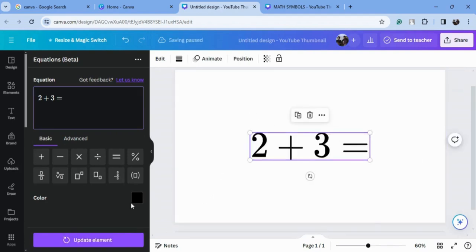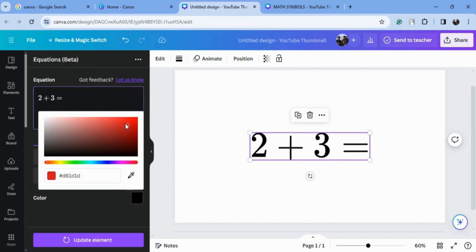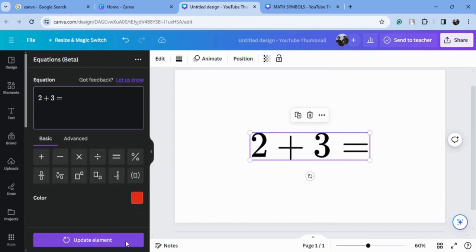You can also change the color of this text. Now click on 'update element'. Now we will see the other options.